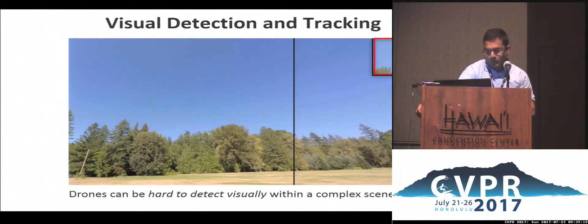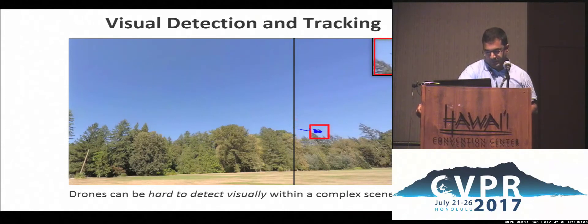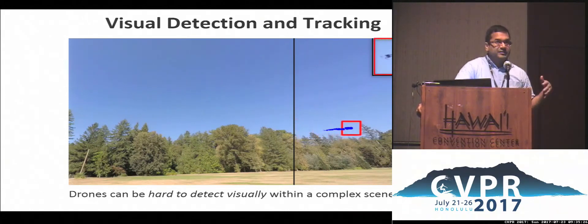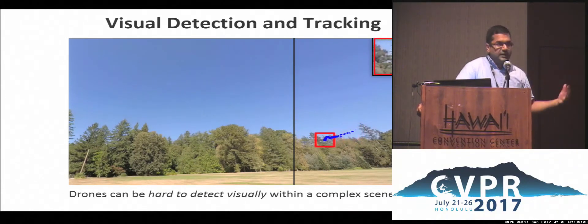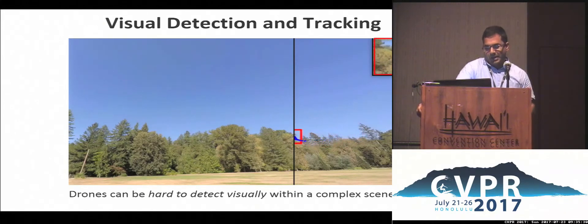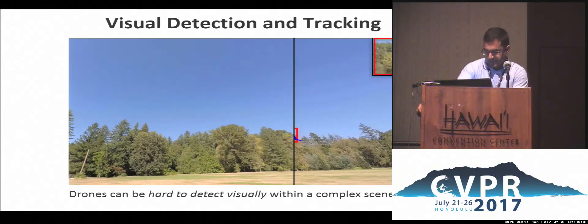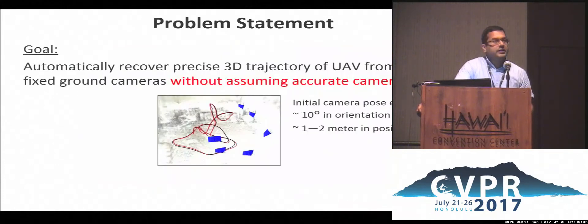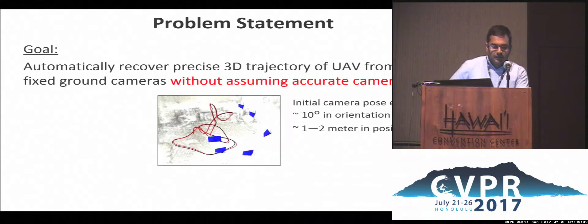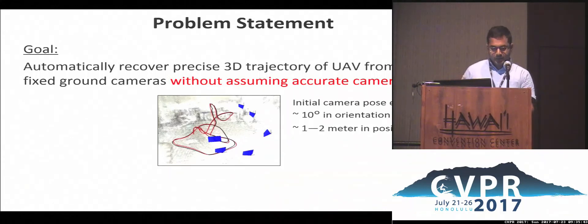Try to see if you can spot this tiny drone in this high-resolution video. The top corner shows an inset of the drone. Depending on the background scene in which the drone is observed by the camera, this could be a really hard visual detection task. Concretely, the problem we're interested in is figuring out a way to automatically recover the precise 3D trajectory of a UAV from a few fixed ground cameras.